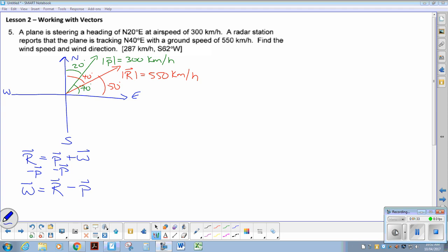So from that, we know then my resultant vector minus my plane vector is going to result in my wind vector. So the resultant in this case is, so in both cases, the x component will be positive, and the y component will be positive.